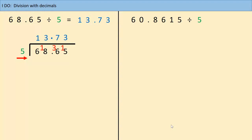We're going to do one more of these, but we're not going to spend a lot of time because you smashed this yesterday. So, 60.8615 divided by five. This one isn't money, because we have four decimal places — eight, six, one, five. But the method is exactly the same.